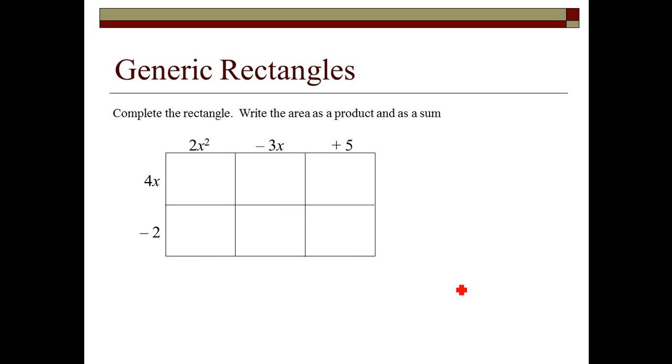So a typical problem. We want to complete this rectangle, and it's all about area, in order to figure out what is the product of 2x squared minus 3x plus 5 times 4x minus 2. So we're going to write the area as a product and a sum, and you're going to see what that is.